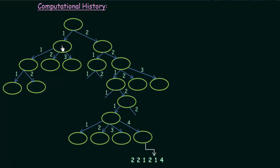These bubbles represent configurations. The numbers represent the branches of a certain node — a node representing a configuration may have two possibilities, so I label them 1 and 2. Similarly, a node with three possibilities is labeled 1, 2, and 3, and one with four possibilities is labeled 1, 2, 3, and 4. These numbers are given because we want to know which branch will lead to an accept, so we need to keep track of which branch we have taken.